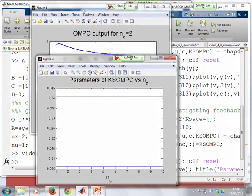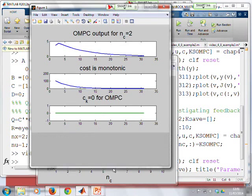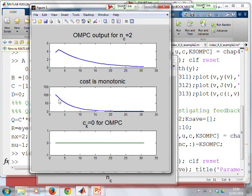You'll see in figure 1 the output, and here for NC equals 2, clearly the output's convergent, as you expect. This is stabilising, that's good. The second figure shows the cost function. Clearly, this cost function is monotonic, as expected. The last figure here shows the value of CK.